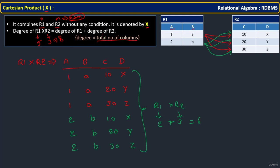This is called the Cartesian product. The number of attributes in the result is the number of attributes in the first relation plus the number of attributes in the second relation. The total number of records is the product of the number of records in R1 and R2.